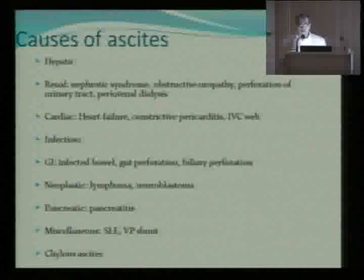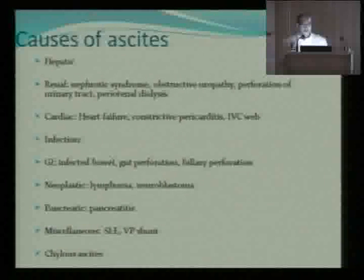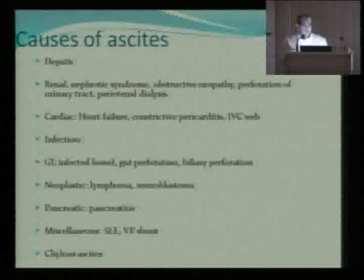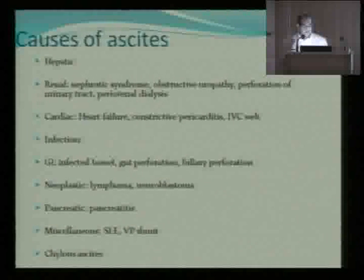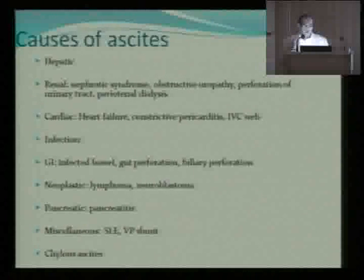The causes of ascites are several — related to the liver, but also secondary to other organs. These include heart infection, viral hepatitis, GI infected bowel, gut perforation, biliary perforation (which is uncommon but can be seen in the neonatal age group), neoplasms, pancreatitis (which can sometimes be easily forgotten in children), and VP shunts. Taking a careful history and examining the child is quite important. If it is chylous ascites, you are in big trouble.